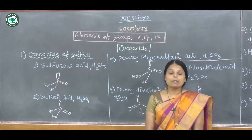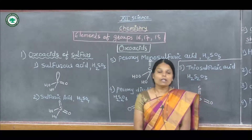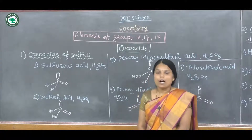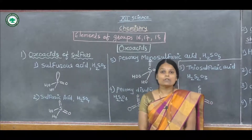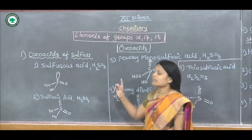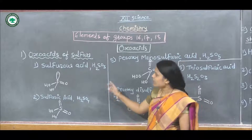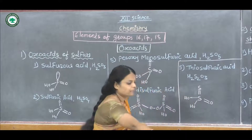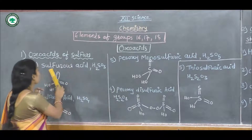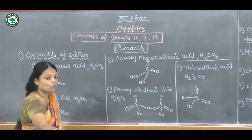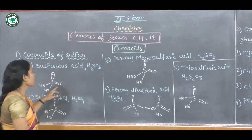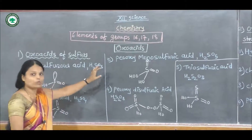These oxoacids are unstable and purely isolated. They are known in aqueous solution and are formed in aqueous solution. The first oxoacid is sulfurous acid, with the formula H₂SO₃.